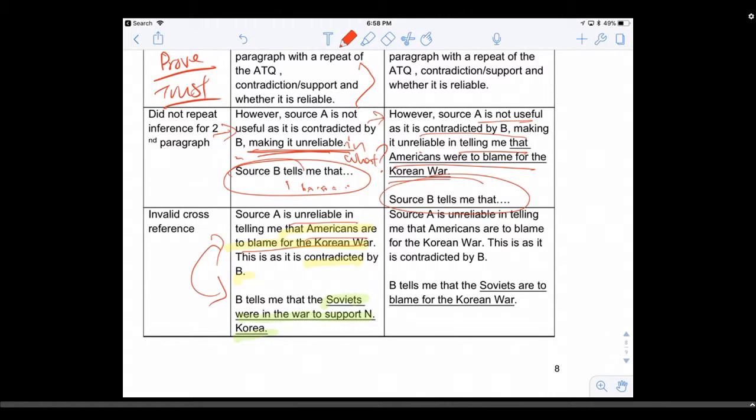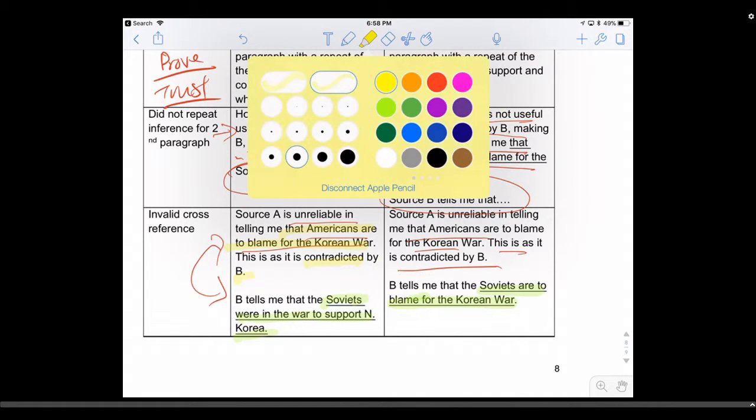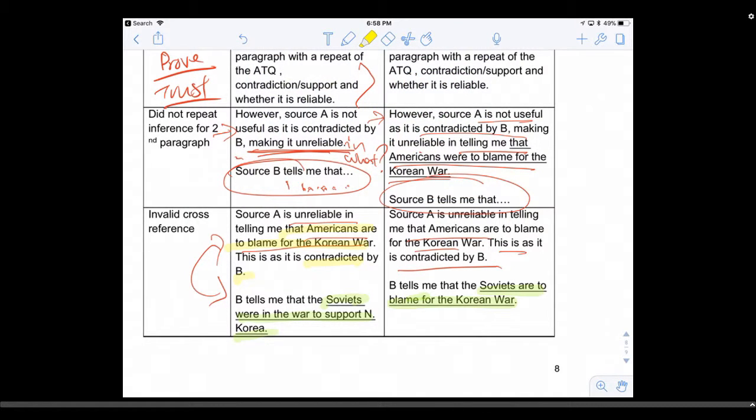The correct one is: 'Source A is unreliable in telling me that Americans are to blame, as it is contradicted by B. B tells me Soviets are to blame.' I cannot emphasize this enough - all your reliability and comparison questions, your criteria has to match. Inference is different, criteria must match. It's who is to blame, who is the aggressor, who instigated the war.